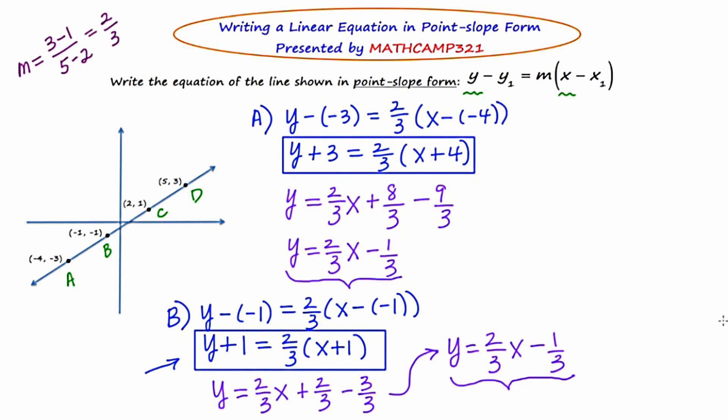The reason this happens is because a line is made up of infinitely many points. And the line though has the same slope. So while the slope remains 2 thirds, you can use any of those infinitely many points. So there's really infinitely many point-slope forms for each line.